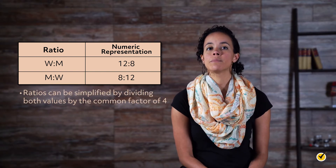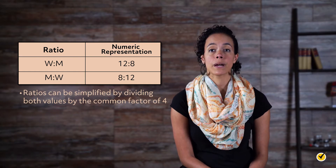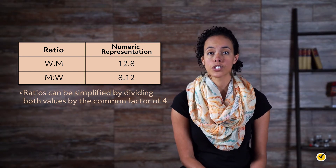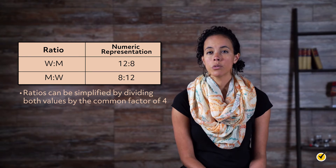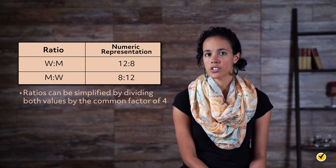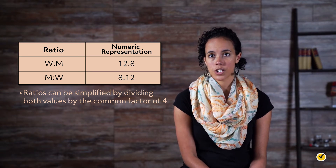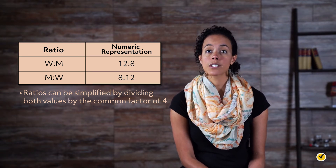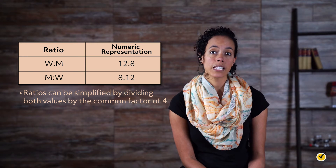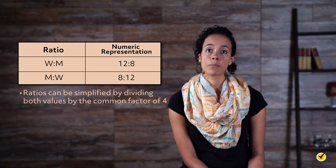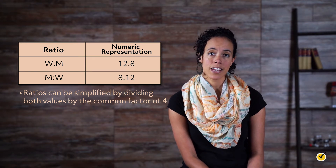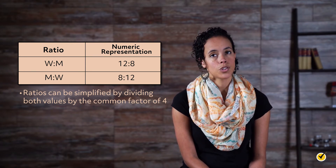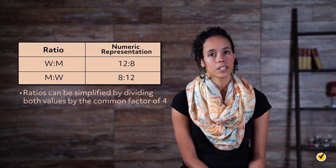Note that ratios can be simplified by dividing both values by the common factor of 4, which will not change the meaning of the ratio. The simplified ratio still represents the relationship of the number of women to men — 3 to 2 — and the number of men to women — 2 to 3.